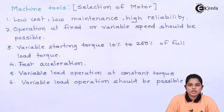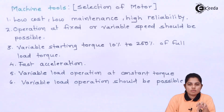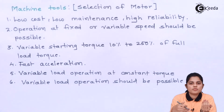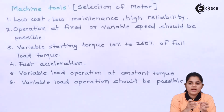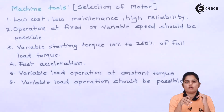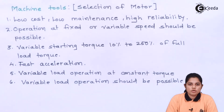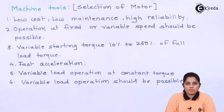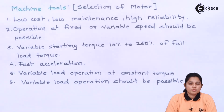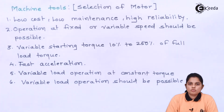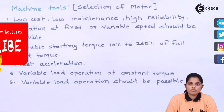If you are connecting multiple loads to one motor, it is not always possible that your load is fixed. Sometimes you have to connect different types of loads. Whenever you are connecting different types of loads, operation at a constant speed and constant torque is the requirement of that particular motor. These are the criteria that need to be understood and considered while selecting a motor for a specific purpose or project.